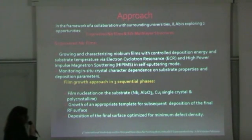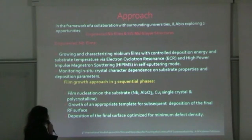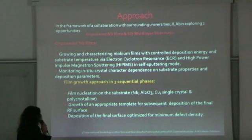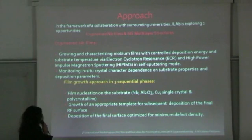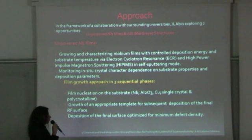The idea is to grow and characterize niobium films with controlled deposition energy and substrate temperature via electron cyclotron resonance, or ECR, and also high-power impulse magnetron sputtering in the future. We also monitor in-situ the crystal character dependence on substrate properties and deposition parameters. One key idea proposed to DOE in this grant is to approach film growth in three sequential phases: first, nucleate a film on the substrate — whether insulating or crystalline; second, grow an appropriate template or intermediate layer; and third, deposit the final surface optimized for minimum defect density, which is the surface seen by the RF.